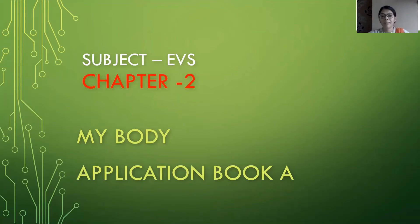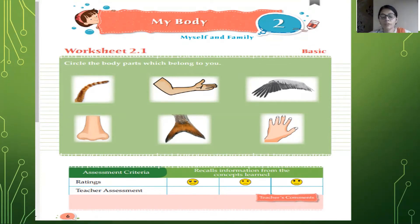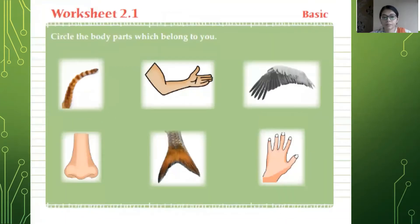Page number six, worksheet 2.1. Over here, children, you are going to circle the body part which belongs to you. Pictures of different body parts are given, and there are many body parts that do not belong to us. You are going to circle only the body parts that belong to you. Let's discuss the answers.